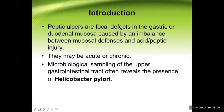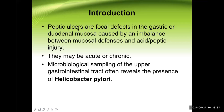Ulcers are focal defects in the mucosa. An ulcer specifically means the focal defect has crossed the muscularis mucosa layer. Mucosa has three parts: mucous membrane, lamina propria, and muscularis mucosa. When the defect crosses the muscularis mucosa, we call it an ulcer. Before that, we call it an erosion.